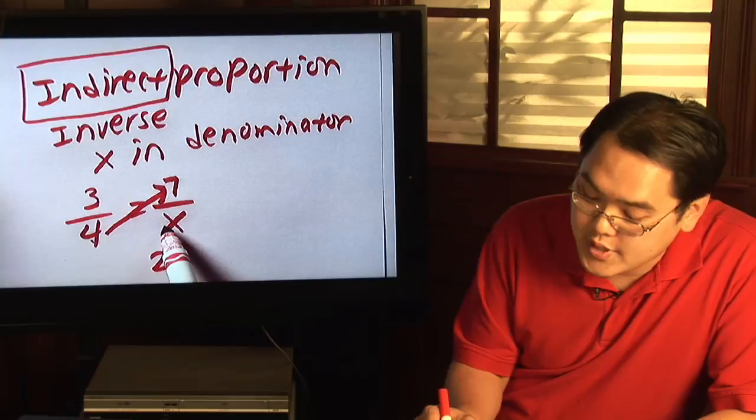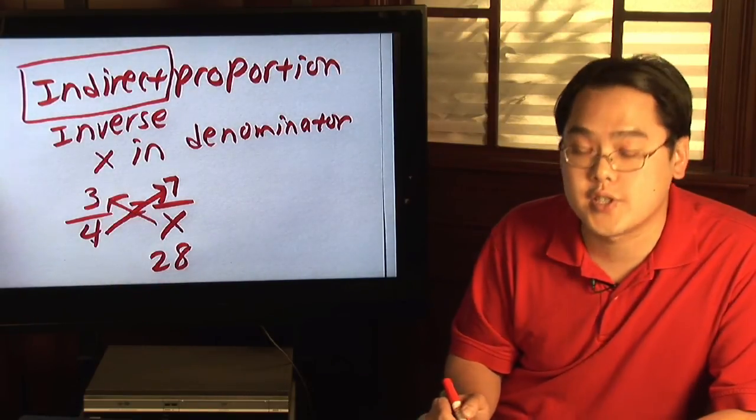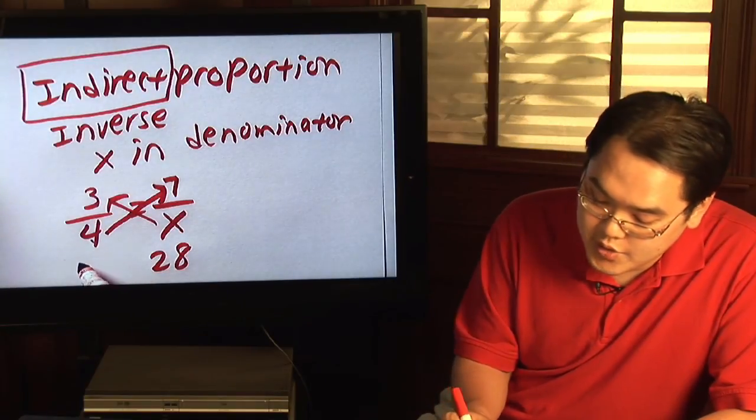On the other side you take the denominator which is x and you multiply it with the other numerator on the other side. So x times three is going to give you 3x.